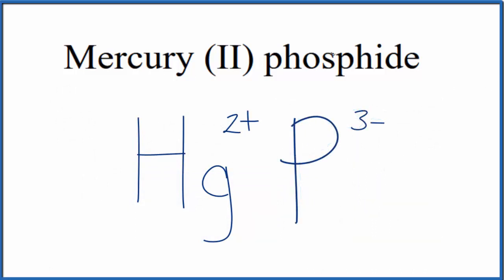Because mercury (II) phosphide is neutral—it doesn't say ion after it—these charges need to add up to zero, giving us a net charge of zero. We can use the crisscross method to make that easier. We move the 3 down here and the 2 over here. We get rid of these symbols, and this is the formula for mercury (II) phosphide: Hg3P2.